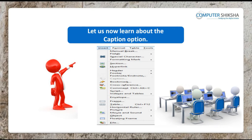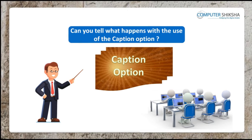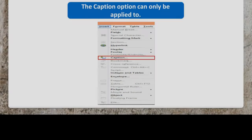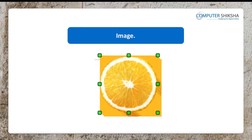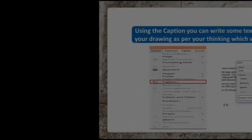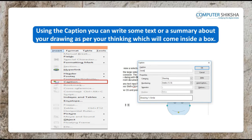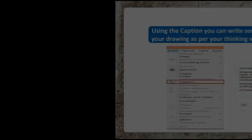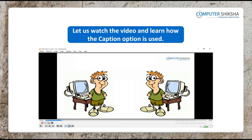Let us now learn about the caption option. Can you tell what happens with the use of the caption option? The caption option can only be applied to image, graphics or drawings, etc. Using the caption, you can write some text or a summary about your drawings as per your thinking, which will come inside a box. Let us watch the video and learn how the caption option is used.